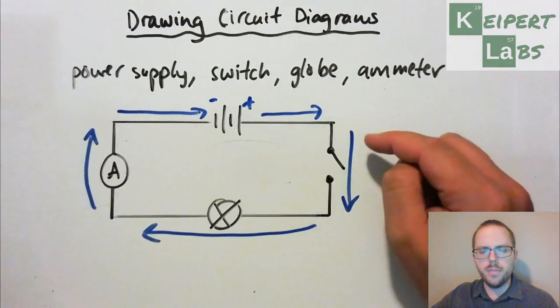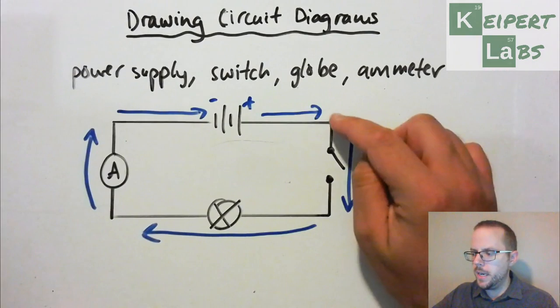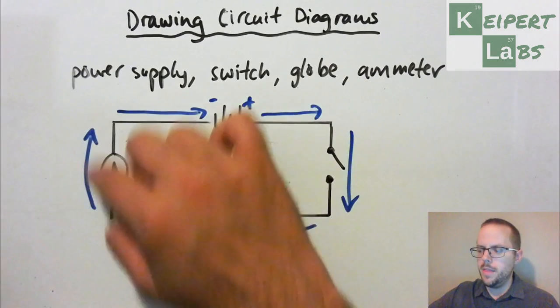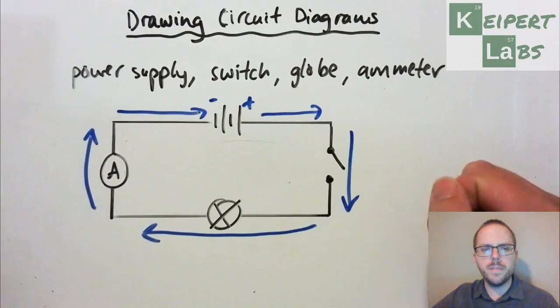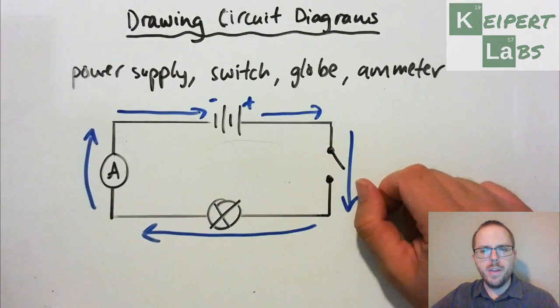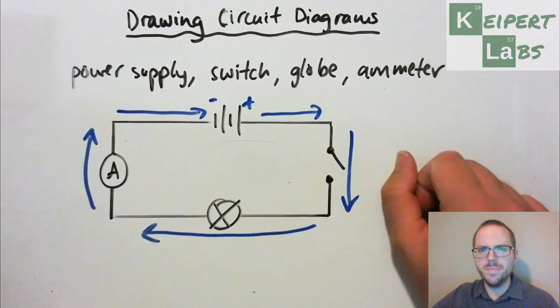So you can see in this example I've used a ruler, I've done things at right angles using a rectangle shape. I've used the correct symbols in the correct order that reflects the way that that energy is flowing. Alright, so make sure that you copy this in and then we can complete some follow-up examples. Thanks very much for watching. Bye for now.